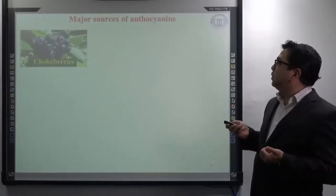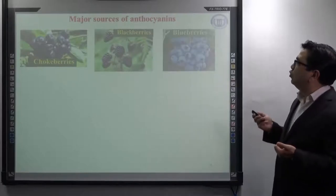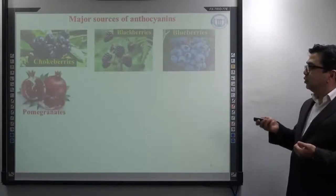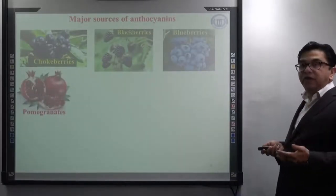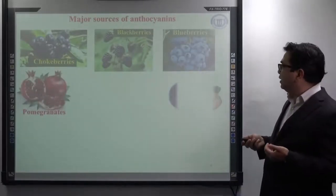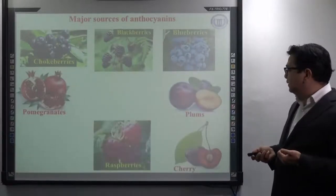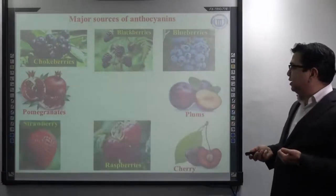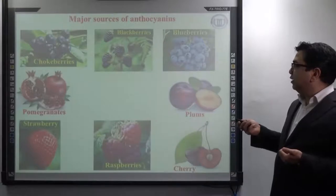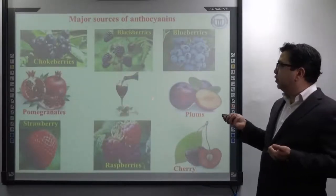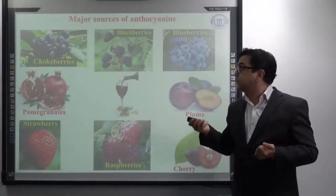Have a look at their pictures. There is a picture of chokeberries, blackberries, blueberries, and pomegranate, which also contains a lot of anthocyanins — as well as cherry, raspberry, and strawberry. In fact, red wine contains a lot of anthocyanins.